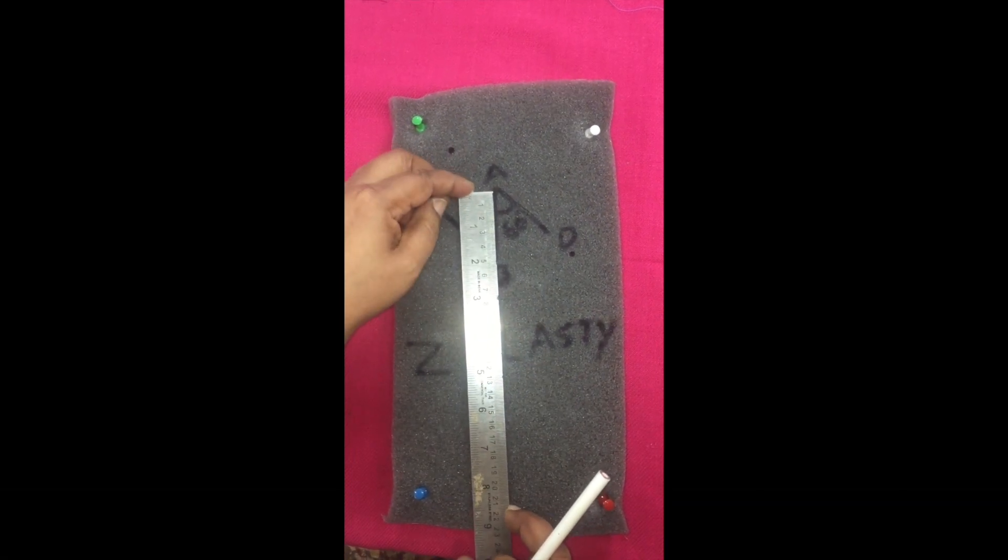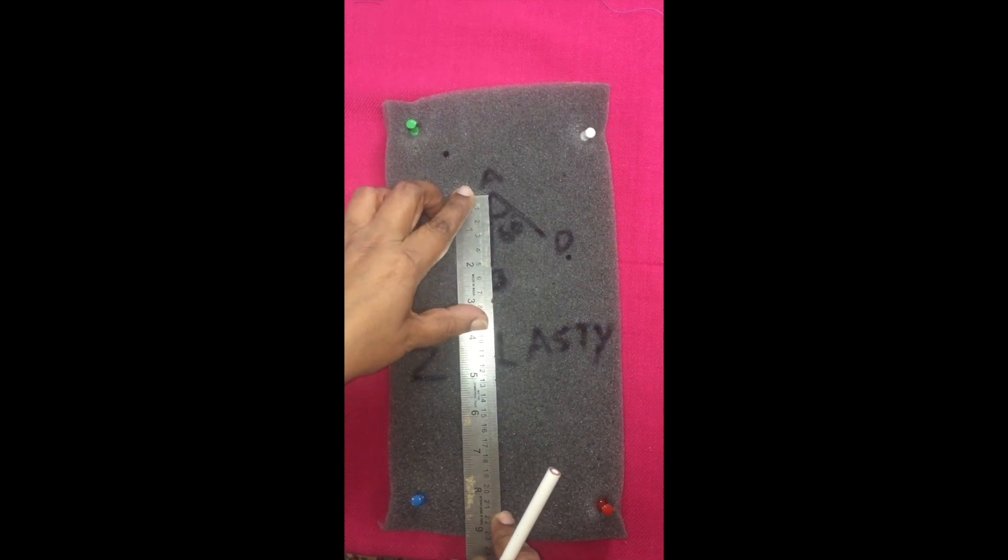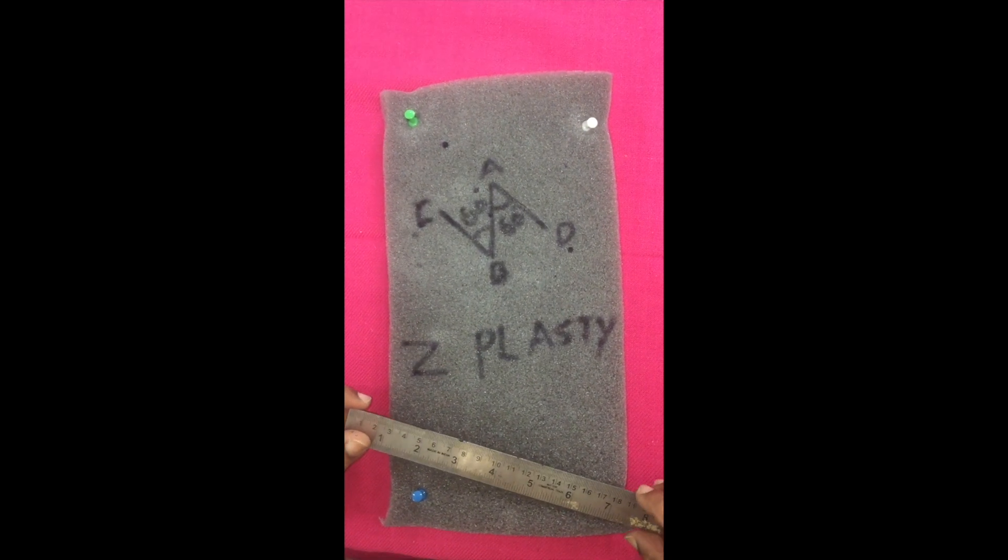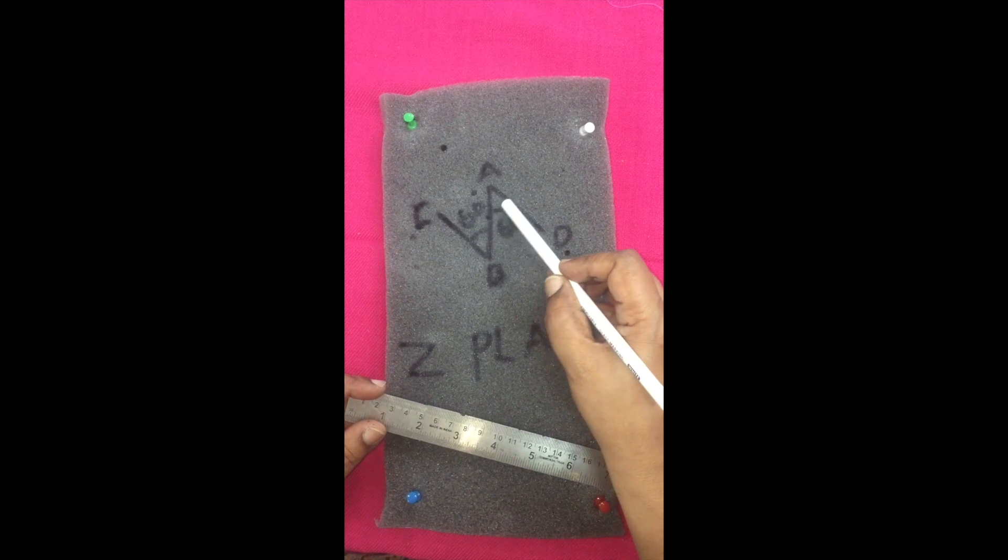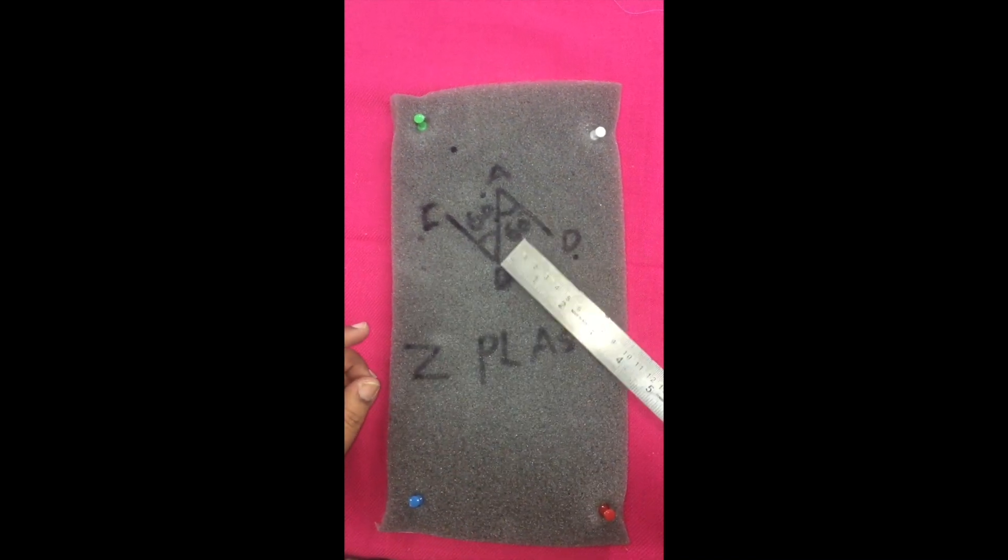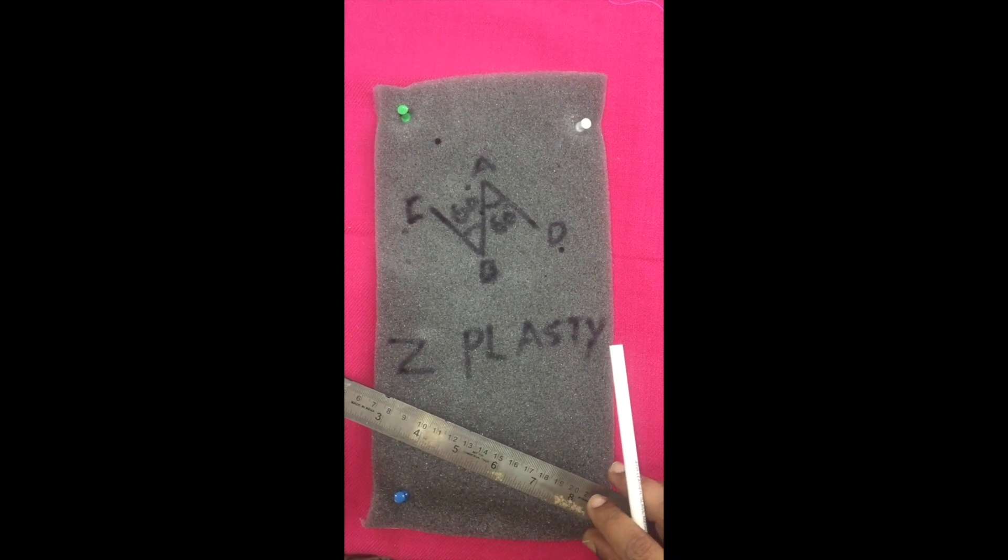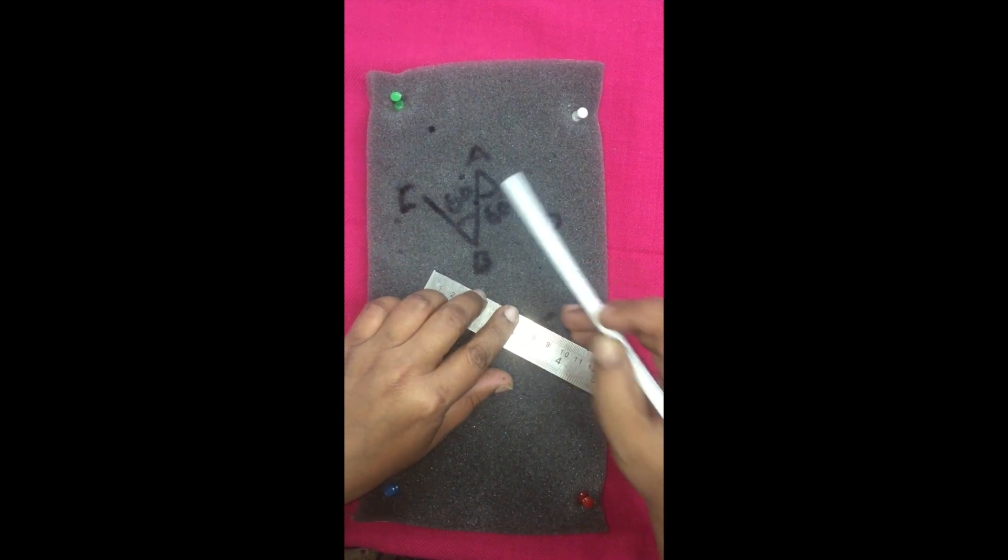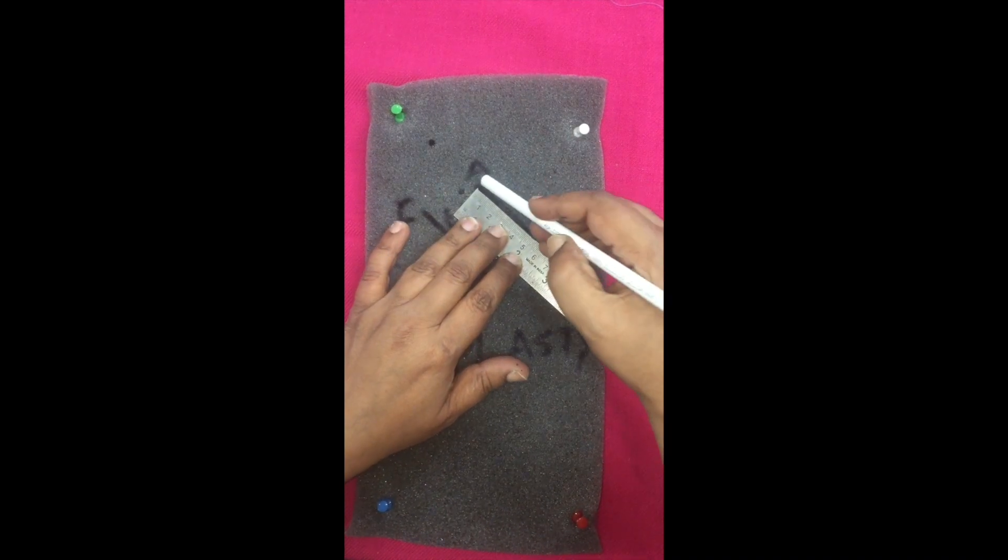Now we will measure the contracture angle. It comes to around 5 centimeters. So now we will do the classic Z on 5 centimeter contracture angle and see how much of lengthening you can get with this. Now we are going to have two angles of 60 degrees. From each end, you are going to mark at 60 degree angle, 5 centimeter lines.